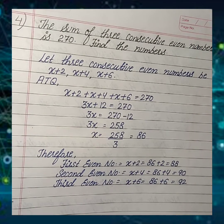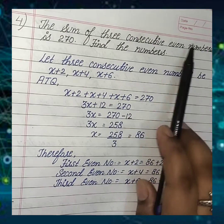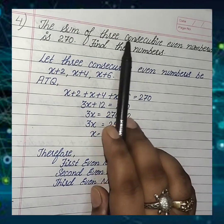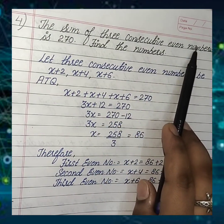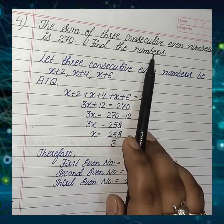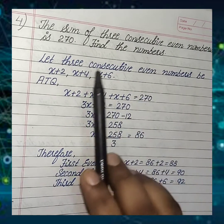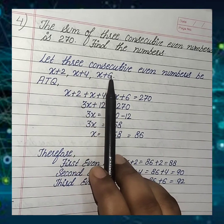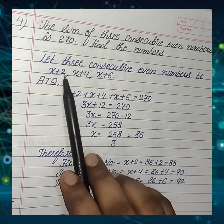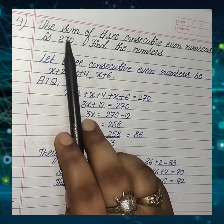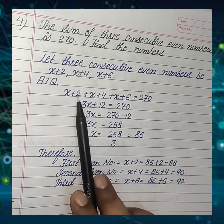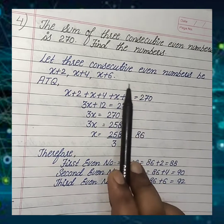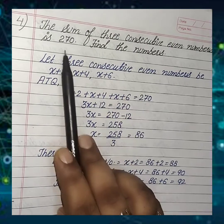Now question number 4. The sum of 3 consecutive even numbers is 270. Sum means addition; 3 lagataar aane wale even numbers ka sum 270 hai. Find the numbers. Suppose the 3 consecutive even numbers are x plus 2, x plus 4, and x plus 6. Since they are even numbers, we add 2, 4, and 6. Their sum is 270, so according to the question: (x plus 2) plus (x plus 4) plus (x plus 6) equals 270. This is the equation.